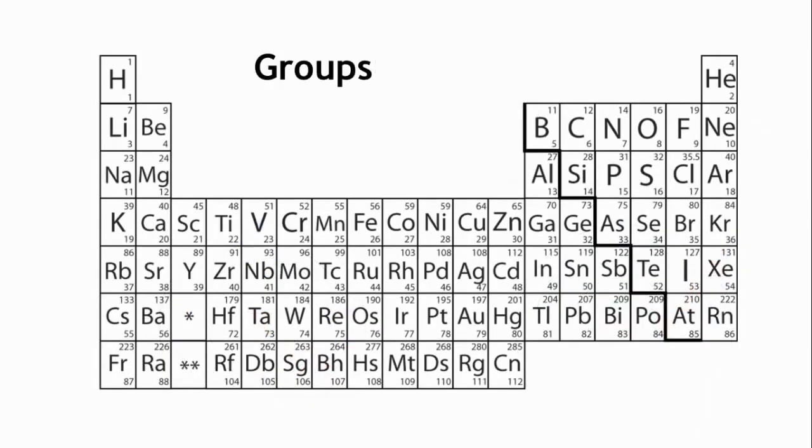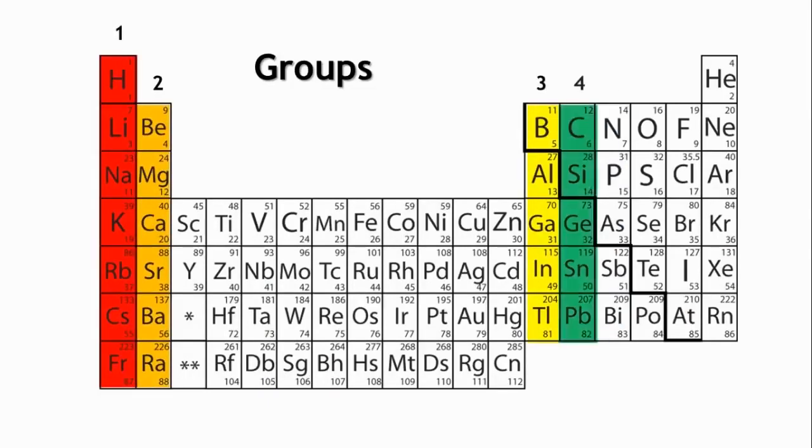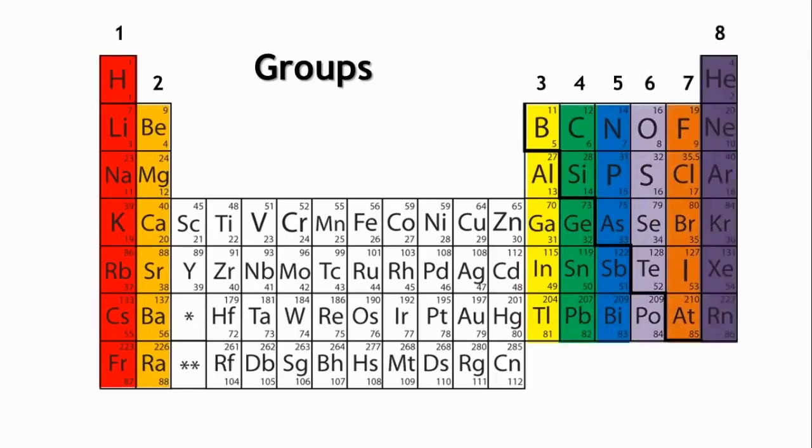The columns going down, from top to bottom, are the groups. Elements in the same group also have something in common. Elements in the same group have the same number of electrons in their outermost shell. The electrons in the outer shell are called the valence electrons. This just means that these are the electrons available for reactions and bond formation.